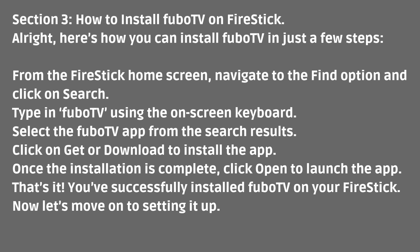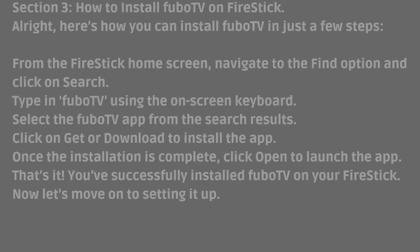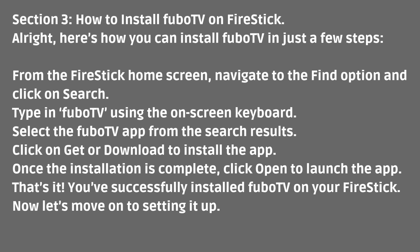How to install FuboTV on Fire Stick. Here's how you can install FuboTV in just a few steps. From the Fire Stick home screen, navigate to the Find option and click on Search. Type in Fubo using the on-screen keyboard. Select the FuboTV app from the search results. Click Get or Download to install the app. Once the installation is complete, click Open to launch the app. You've successfully installed FuboTV on your Fire Stick!